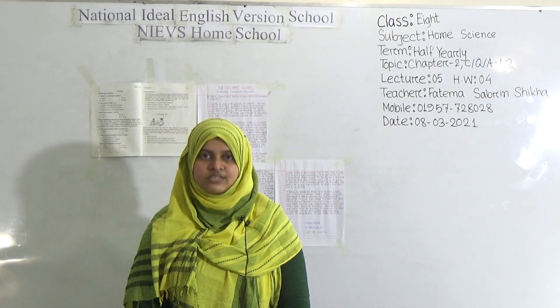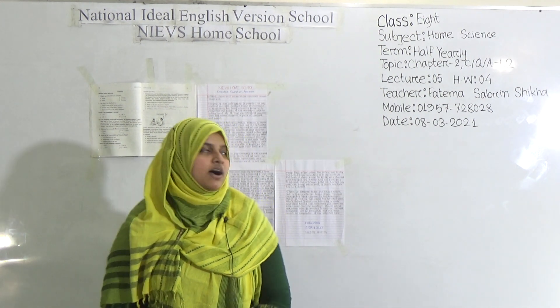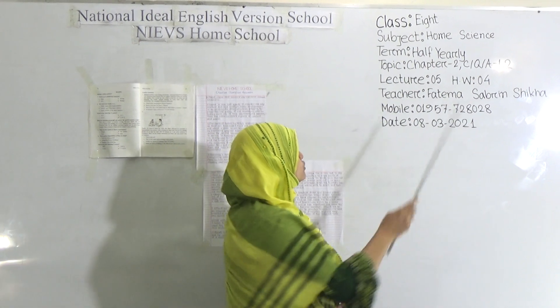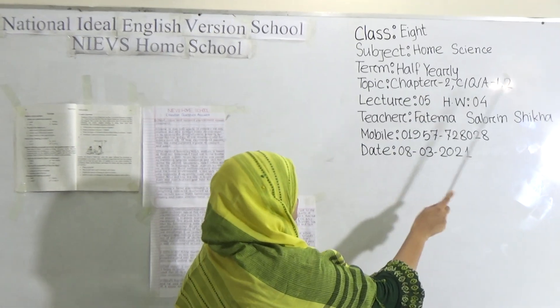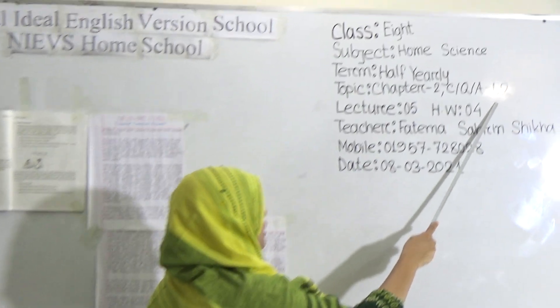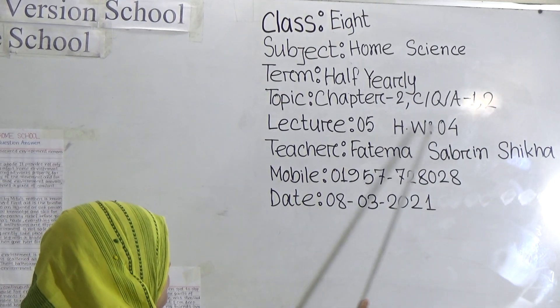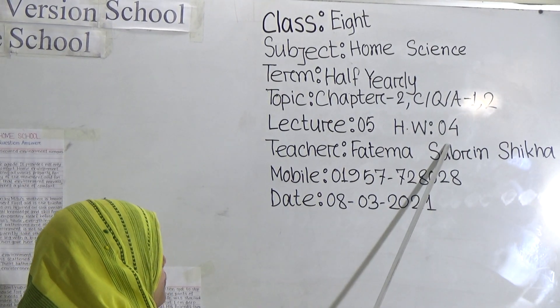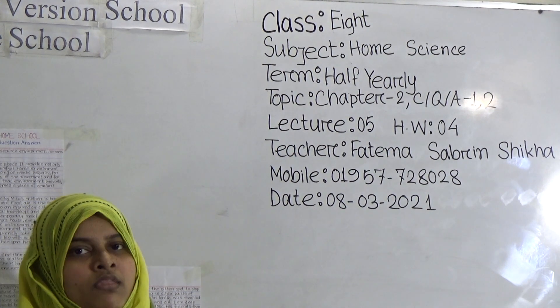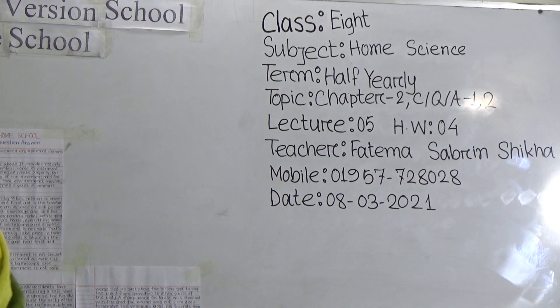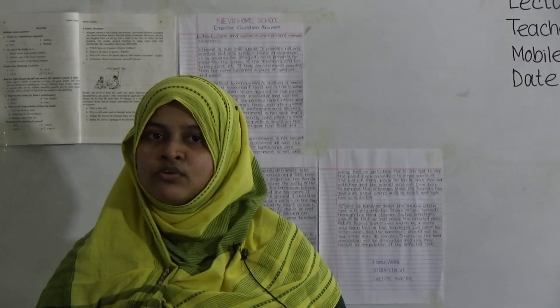Our topic today is chapter two creative question answer one and two from your textbook. This is our fifth lecture and fourth homework. Dear students, please take your textbook and writing materials. We're going to discuss the creative questions given in your textbook, so let's start.